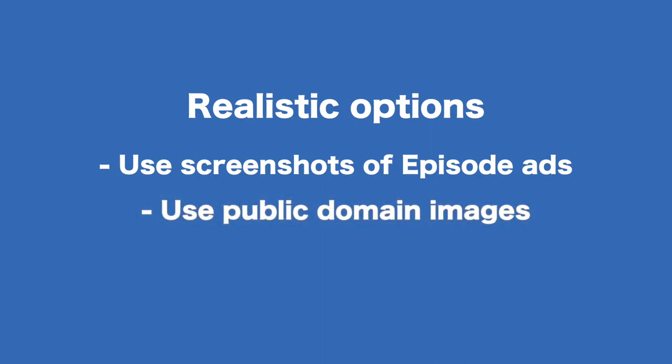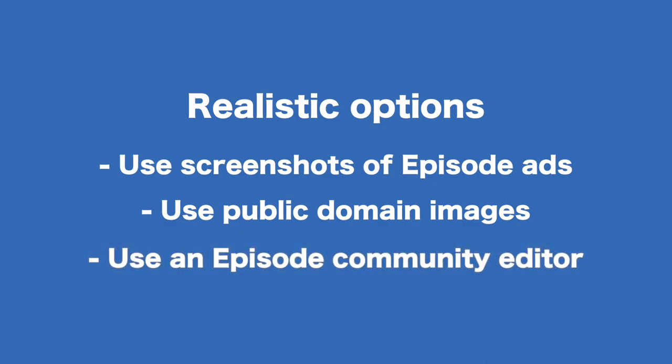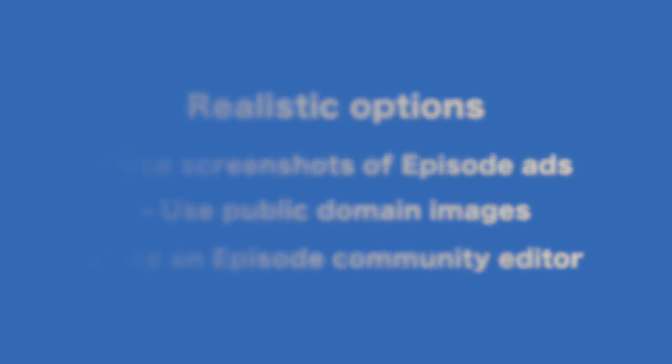Another thing a lot of writers do is use images they find online. This is okay in some cases as long as those images come from public domain sites — sites that offer Creative Commons or public domain images with no copyright attached. I explain where you can get these in my 'Where to Get Episode Backgrounds' tutorial, so definitely check that out. Probably the most common thing to do is get an Episode ad editor from the community on Instagram or the forums to make an illustration based on your characters. This is one of the better options, and if you're friends with one of these artists they may do it for free, though you may not know anyone well enough for this to be an option.